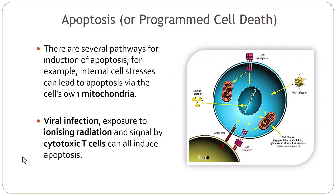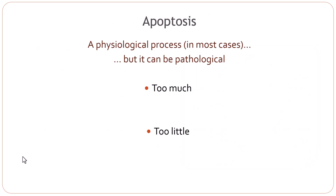What is apoptosis? It is a programmed cell death. There are several pathways for induction of apoptosis. For example, internal cell stresses can lead to apoptosis via the cell's own mitochondria, and signals from outside can also induce apoptosis. If a cell gets infected by viruses, it will try to induce apoptosis. Ionizing radiation and cytotoxic T cells can also induce apoptosis. Apoptosis is usually a physiological process — cells which are damaged beyond repair will commit suicide. During embryogenesis, a lot of apoptosis occurs. So it is basically a physiological process, but it can be pathological as well.